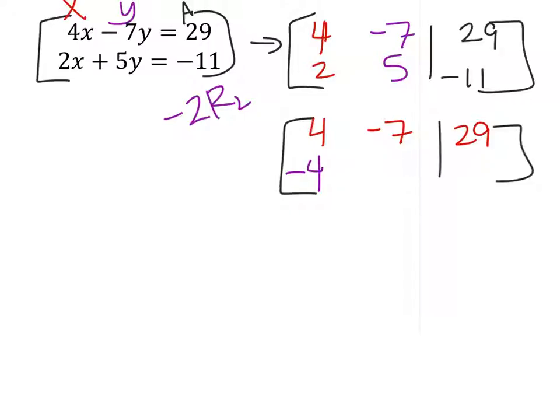Negative 2 times 2, that's the negative 4 there. Negative 2 times 5, that's negative 10. And then finally, negative 2 times the negative 11 gives me a positive 22.